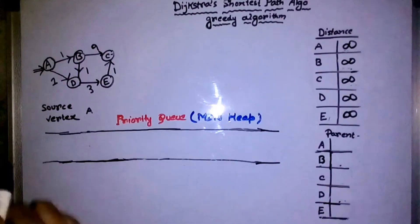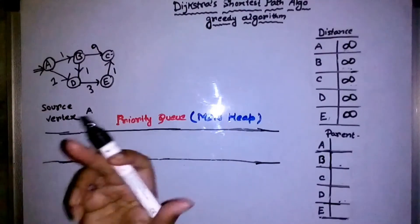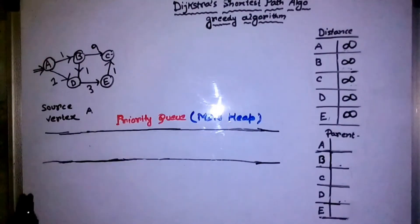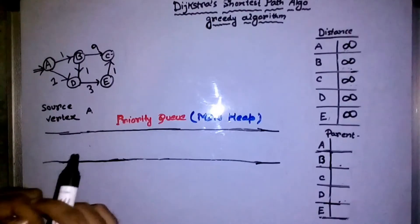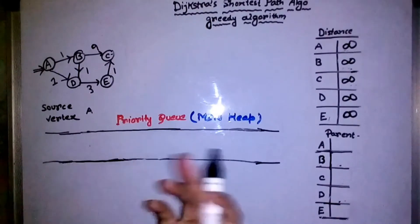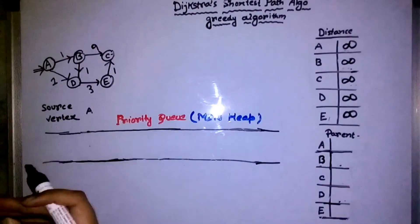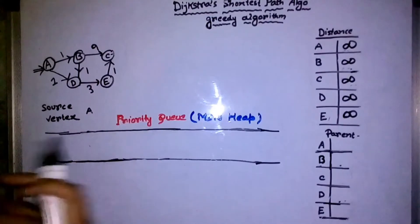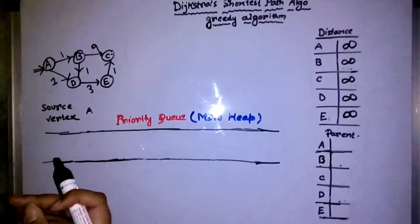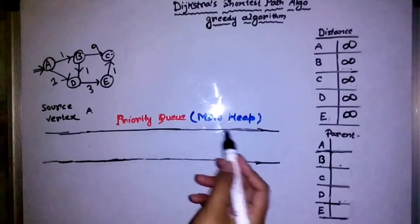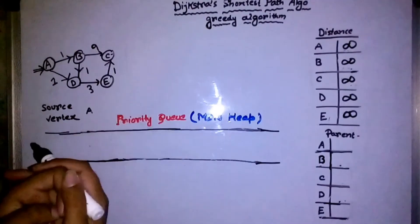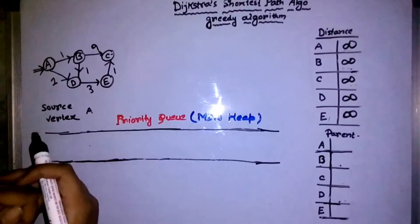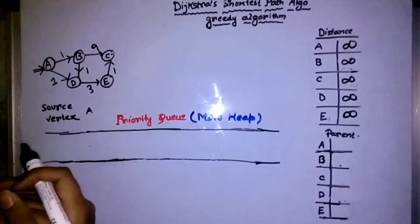What about the priority queue? In a priority queue, all items can be added at any time, but the item that is extracted or deleted depends on its priority. I am using a min-heap implementation here, which means the item with the least priority value is picked up first.